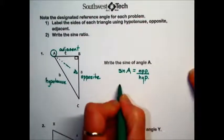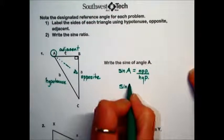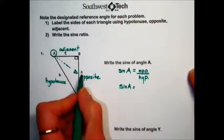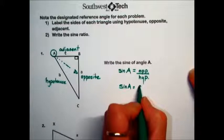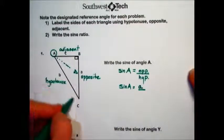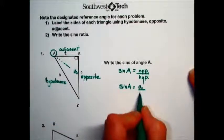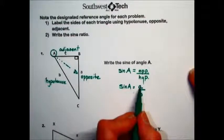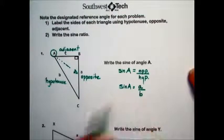So in this triangle, we just identified the opposite side has the designation of A. So to define the sine of angle A, we would answer the ratio A over B.